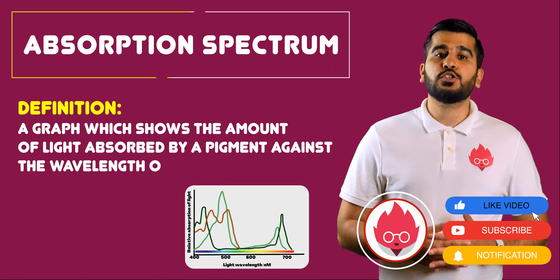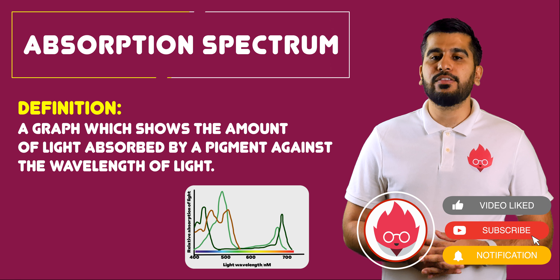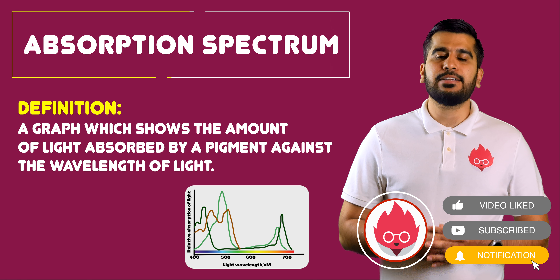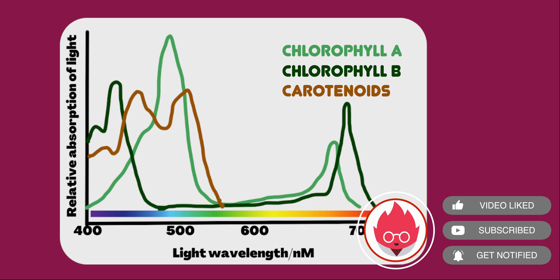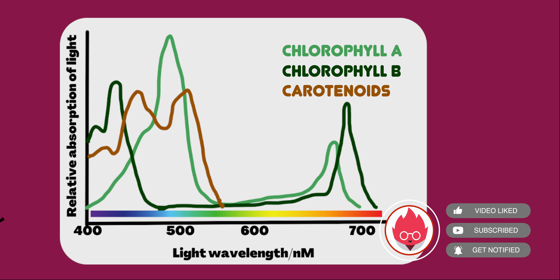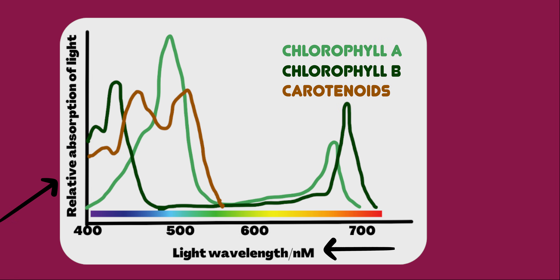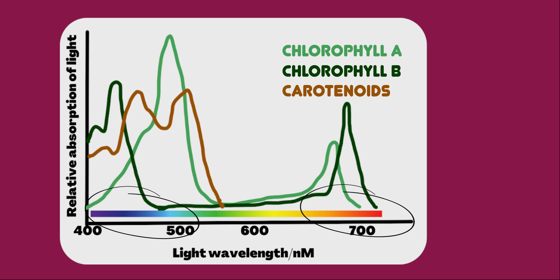Absorption spectrum graphs show us the wavelength of light that different photosynthetic pigments absorb. If you look at this graph, light absorption is on the y-axis and the wavelength of light is on the x-axis. You can see that most photosynthetic pigments absorb light in the blue-violet and red parts of the light spectrum.